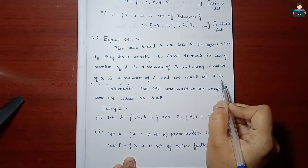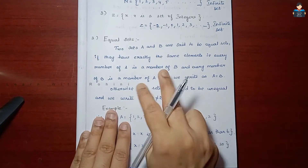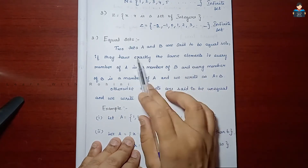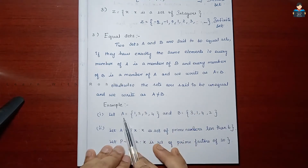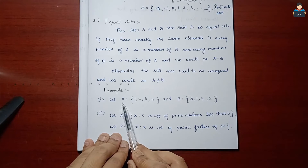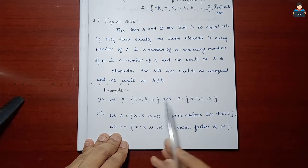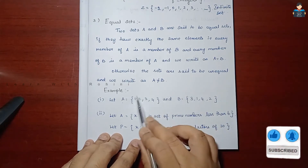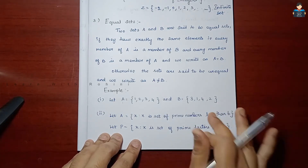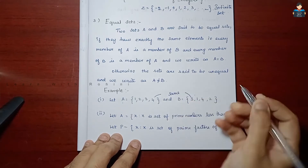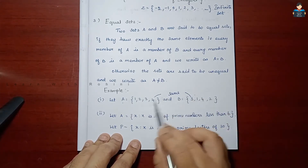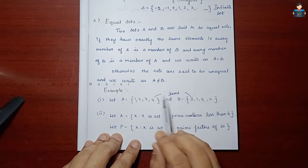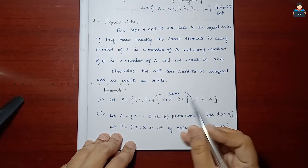We write this as A = B. For example, let set A = {1, 2, 3, 4} and set B = {3, 1, 4, 2}. Check the elements — they are the same. The order of the elements may change, but the elements are the same, so we say A and B are equal sets.